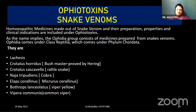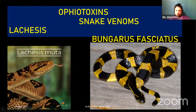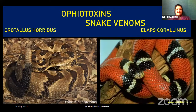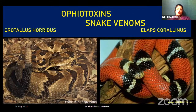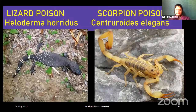The important ophiotoxins: first is Lachesis trigonocephalus, also called Lachesis muta. Then Bungarus fasciatus — you can see how the stripes are looking like facials. Next, Crotalus horridus — it is a horrible-looking snake, hence the name Horridus. Then Elaps corallinus — the beautiful structures on the snake skin are just like a coral, hence the name. Then the lizard poison Heloderma horridum, and the scorpion poison Androctonus.